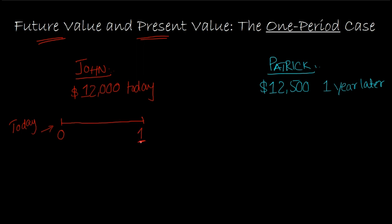One year from now is represented by the number one on the timeline. One convenient way of thinking about this is that time period zero is like January 1st of the year, and the number one is December 31st — one year has gone by. John's $12,000 is offered at time period zero, while Patrick's $12,500 is offered at the end of year one.